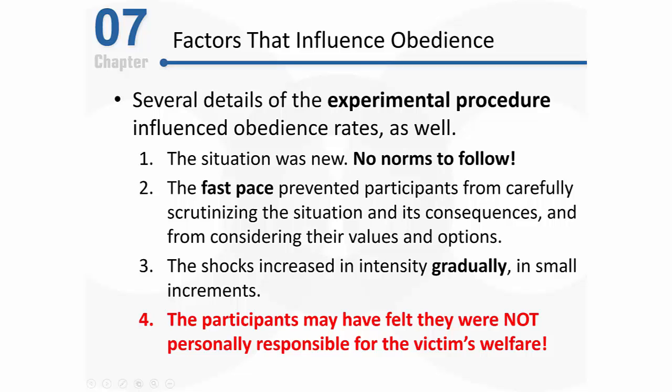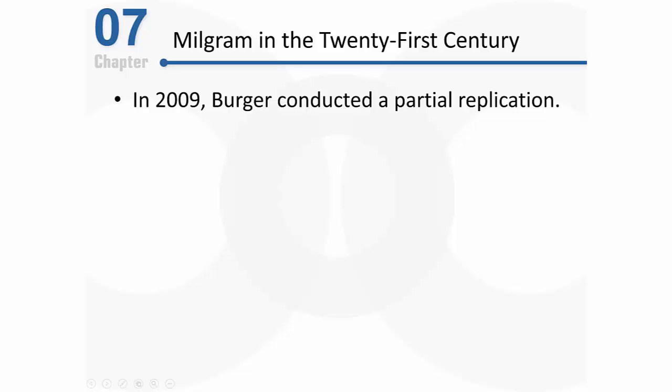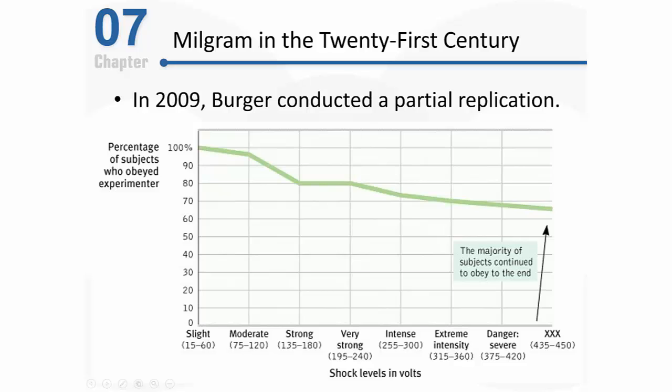Thinking back on Milgram's classic research, it's amazing how much we've learned about human behavior. For years I taught students that no follow-up research could be done due to the ethical problems. But in 2009, Jerry Berger received IRB approval to conduct a partial replication of Milgram's classic study. Berger used Milgram's original procedure but added several safeguards — most notably, the study ended at 150 volts instead of 450, because in Milgram's original study nearly all participants who continued past 150 volts went all the way to 450.